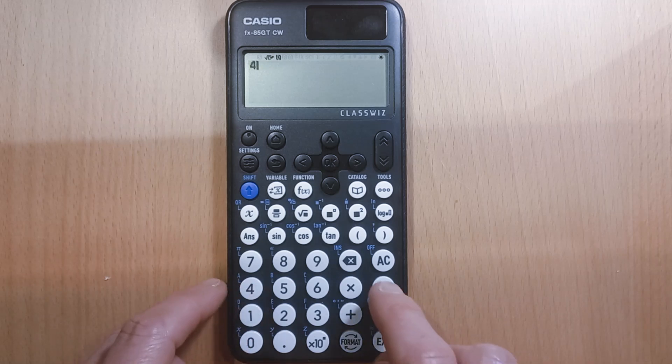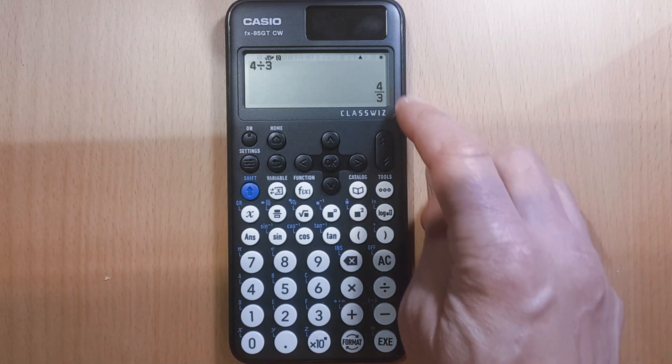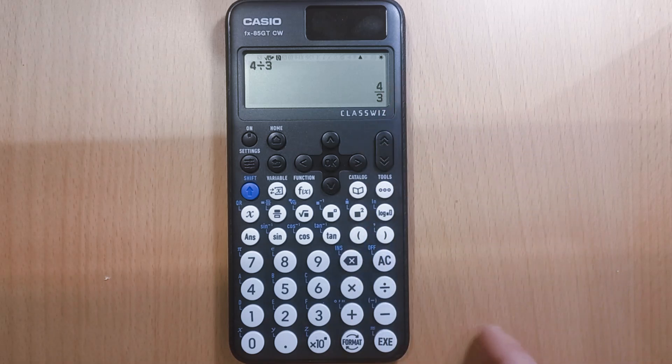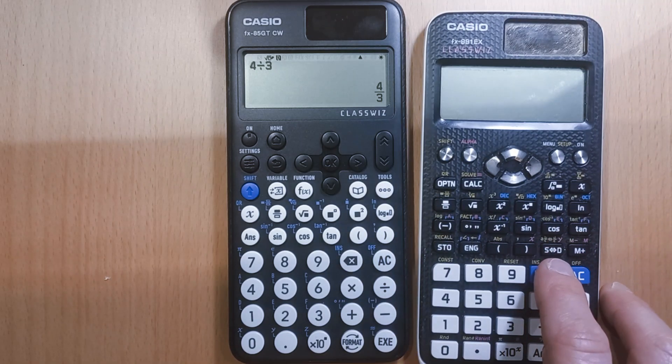We do 4 divided by 3, press EXE or execute—because we don't have an equals sign anymore—and we get the answer as a fraction: 4 over 3. Now, instead of the SD button, which was so handy on the old calculator, we have to do something a bit different.